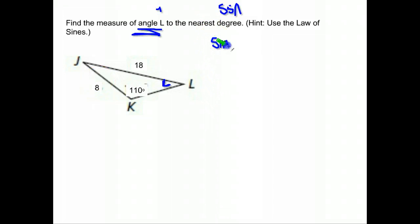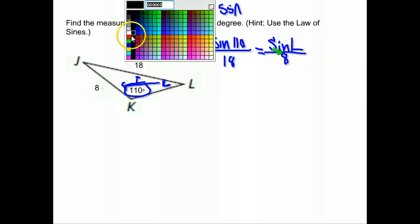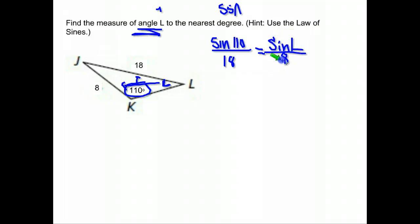So law of sines. You do the sine of an angle in the triangle. Let's go with this 110 over the length of the side across from that. The length of the side across from the 110 was 18. Should equal the sine of another angle. Now we're going to use this one because that's the one we're looking for. So sine of L over the length of the side across from L, which happened to be 8. We need to solve for L, so we need to move everything away from it. Right now we're taking the sine of L and it's being divided by 8, so we're going to start by multiplying both sides by 8 to remove that division.